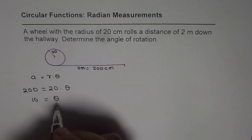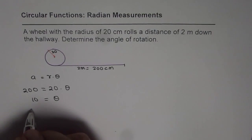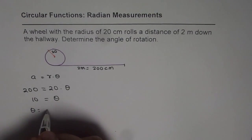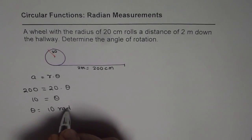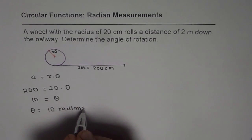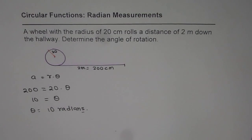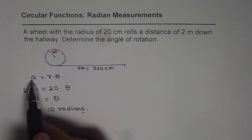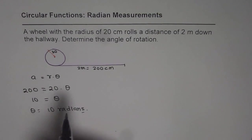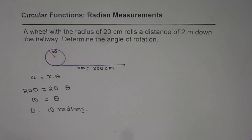This unit is in radians, so we have theta equals 10 radians. Radians are the ratio of arc length over radius, which is dimensionless — it has no unit — so we write radians for it. Therefore theta equals 10 radians.